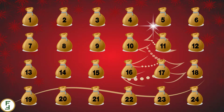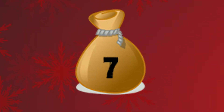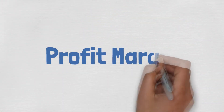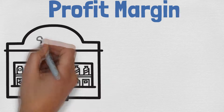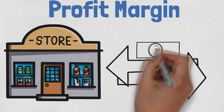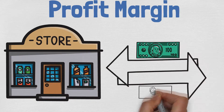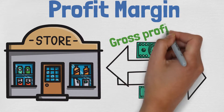Welcome to door number 7 of the finance calendar where we dive into 24 financial ratios in 24 days. Don't forget to subscribe so you don't miss any of the ratios. Today we are going to talk about the profit margin. It tells us how much of the profit is remaining from sales after all expenses have been paid. There are many types of profit margins, so let's take a look at how we can calculate them.